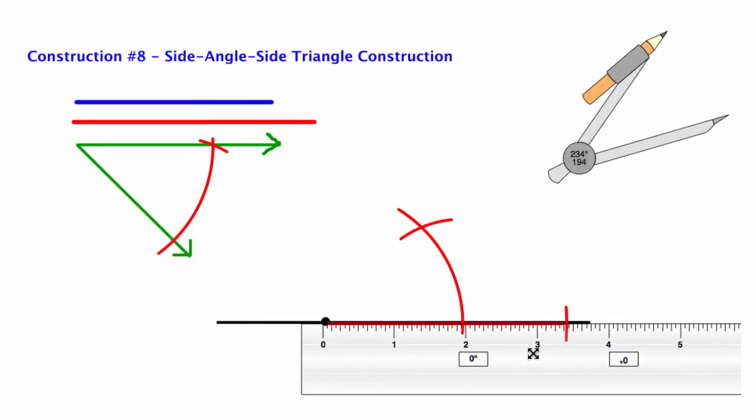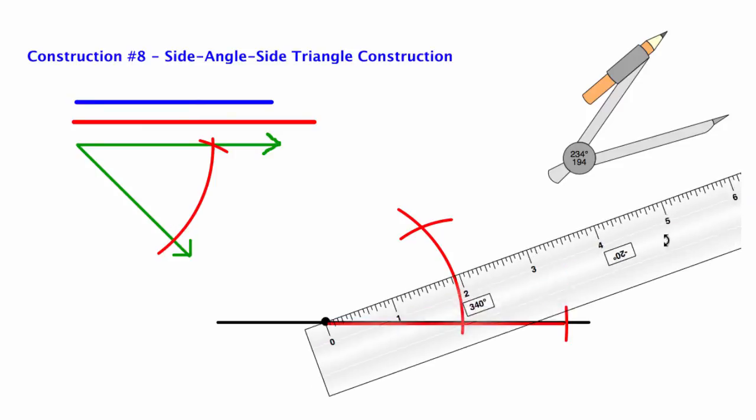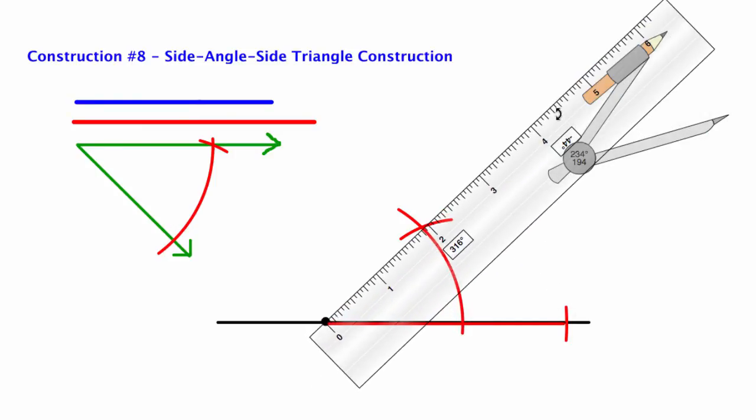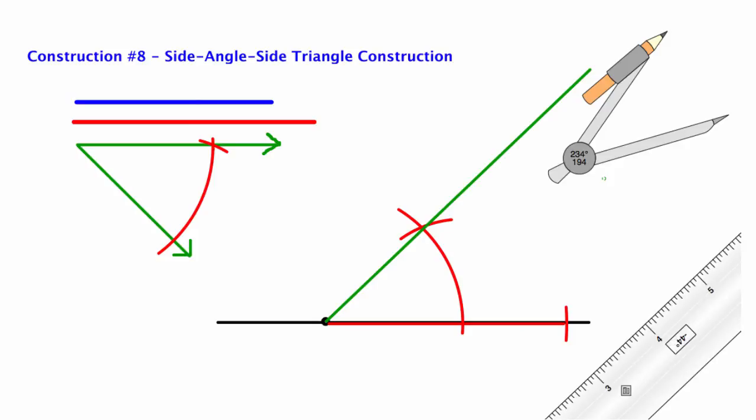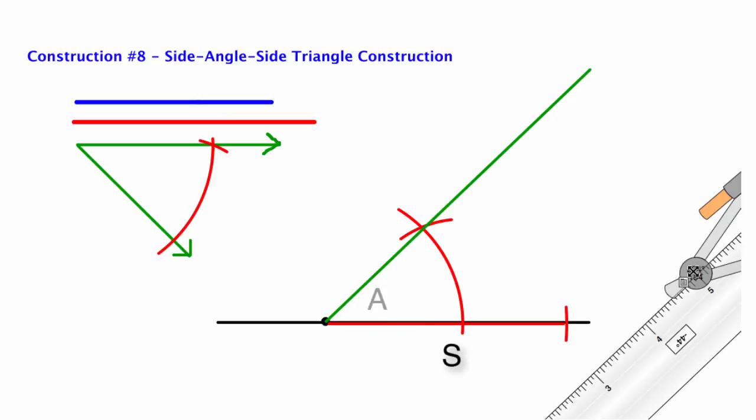And I swing a little mark there and I see my X. I have two points, the endpoint and the X to draw my ray. Again, this is a ray. I don't know how long that side is. This is just an angle that I've copied. I've got a side and an angle, but I don't know how long that second side is yet.